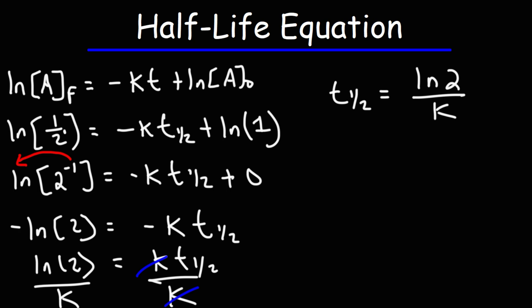For a first-order reaction, the half-life does not depend on the initial concentration of the substance — it only depends on the rate constant K, which means the half-life is constant because K is constant. The half-life doesn't change with respect to the initial concentration. If you change the initial concentration of the substance, the half-life is not going to change for a first-order reaction.